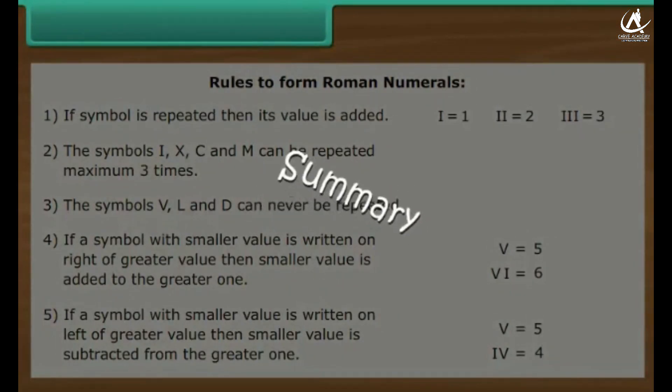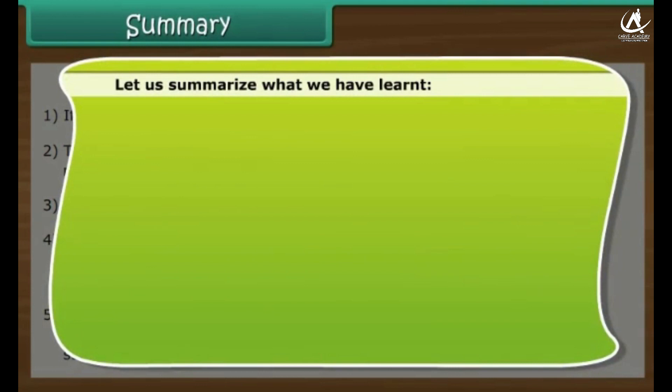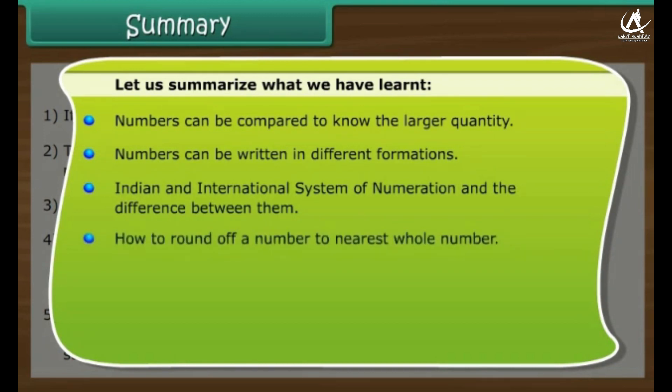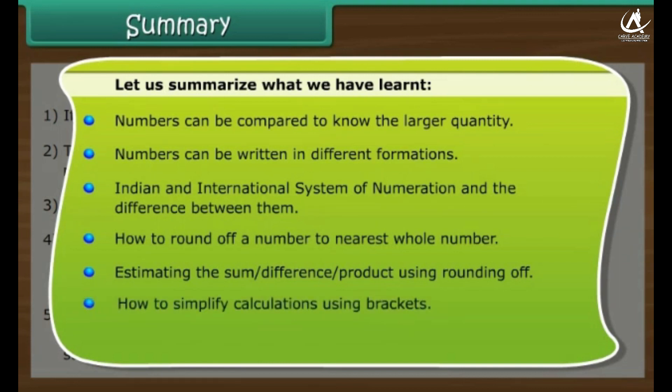Summary. Let us summarize what we have learned. Numbers can be compared to know the larger quantity. Numbers can be written in different formations. Indian and international system of numeration and the difference between them. How to round off a number to nearest whole number. Estimating the sum, difference, product using rounding off. How to simplify calculations using brackets. Roman numerals.